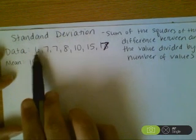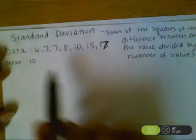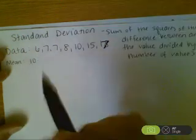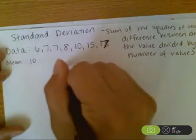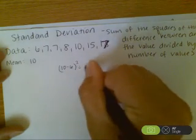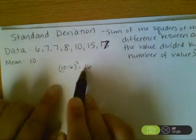The first thing that you do is you take each data value separately and you subtract it from the mean. It doesn't matter which one you write first because you're going to square it, so your negatives are going to cancel out. So if my mean is 10, for my first value, 10 minus 6 is 4. 4 squared is 16. That's my first one.